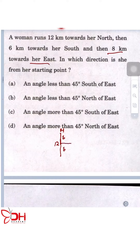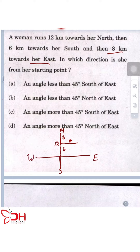She goes 8 kilometers east. In which direction is she from her starting point? So this is south, this is east, and this will be west. From the starting point, she is over here — the question is in which direction is she? She is at her north-east. The options are an angle less than 45 degrees or an angle more than 45 degrees.